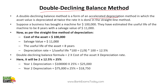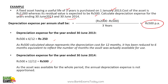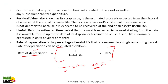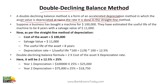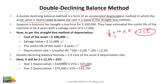The double declining method is an accelerated depreciation method in which the asset value is depreciated at twice the rate it is done in the straight line method. How to calculate the depreciation rate: one divided by useful life multiplied by 100%, then multiply by two. For example, cost of an asset is 1,00,000, salvage value 11,000, useful life eight years — so depreciation rate is 25%, and depreciation for year one would be 25,000. In year two, on the residual value of 75,000, 25% gives 18,750 depreciation.